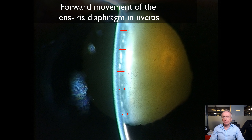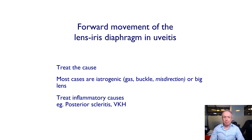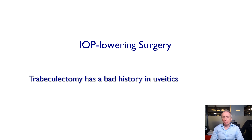Forward movement of the lens-iris diaphragm is obviously a very characteristic diagnosis, but most cases are actually iatrogenic — even in uveitis. Scleritis and VKH are rare causes; most are due to aqueous misdirection, a large lens, or gas buckle after vitrectomy. When IOP-lowering surgery is required, trabeculectomy has a bad history in uveitis, and tubes traditionally work well.